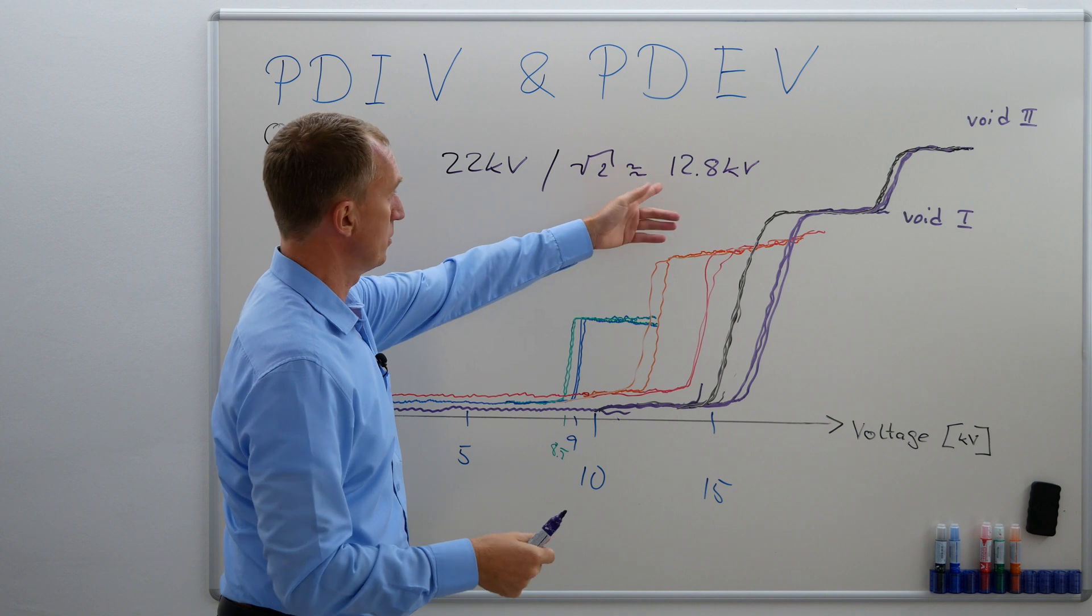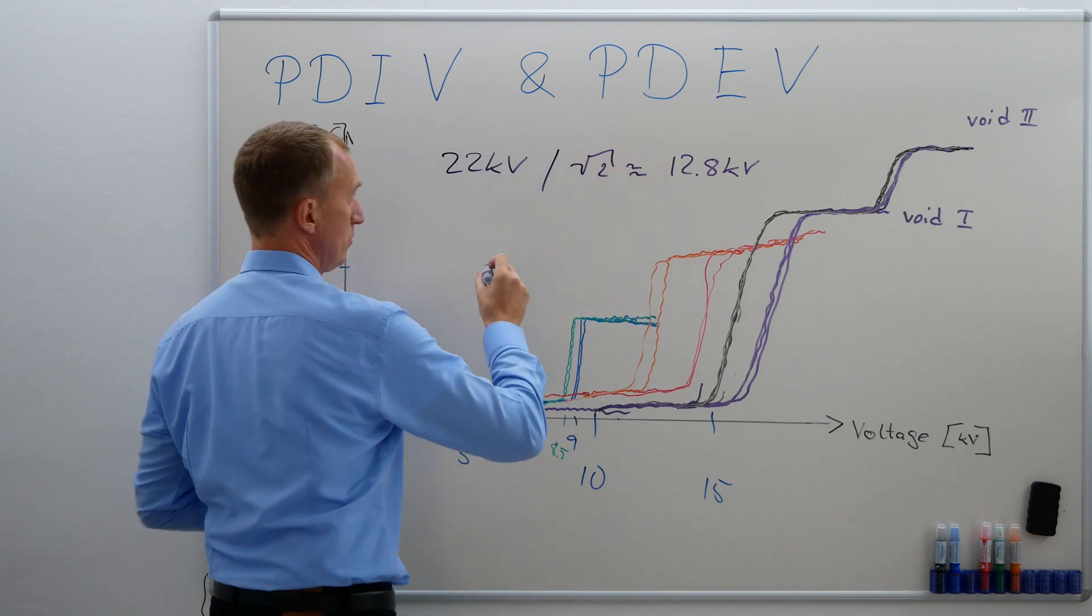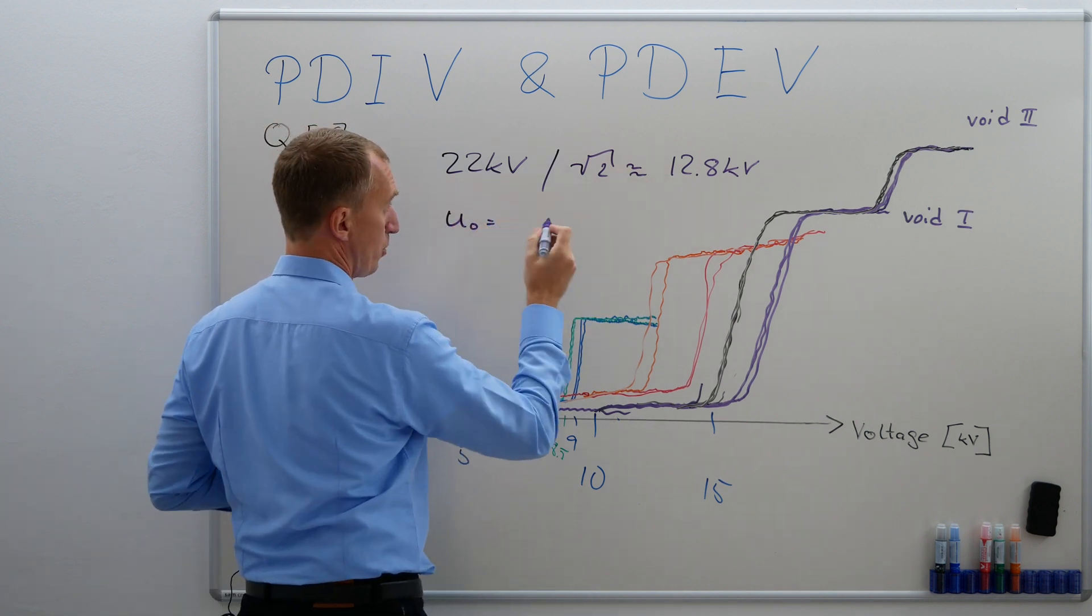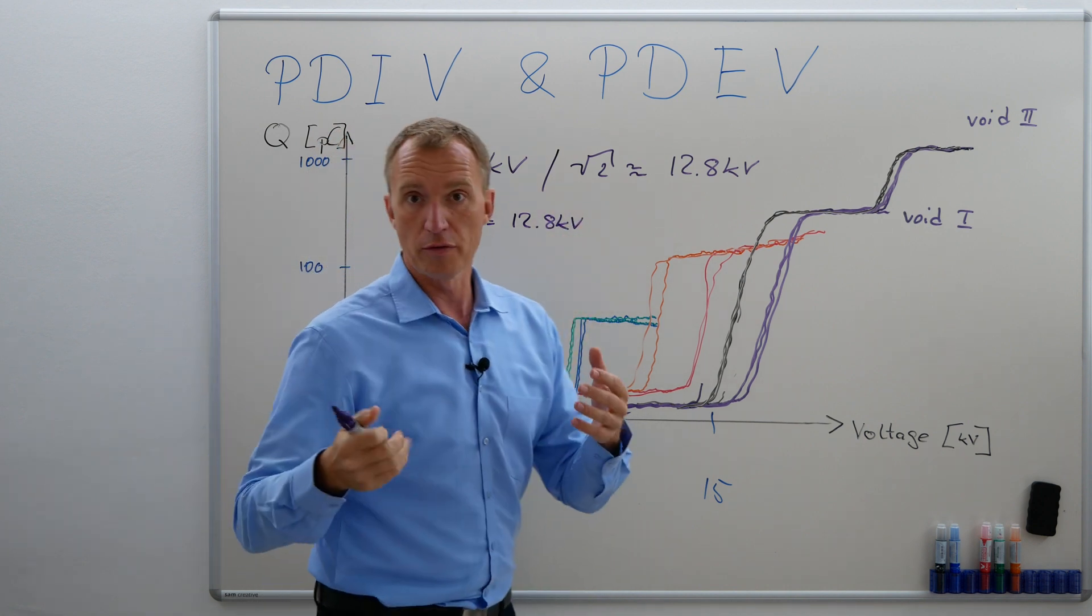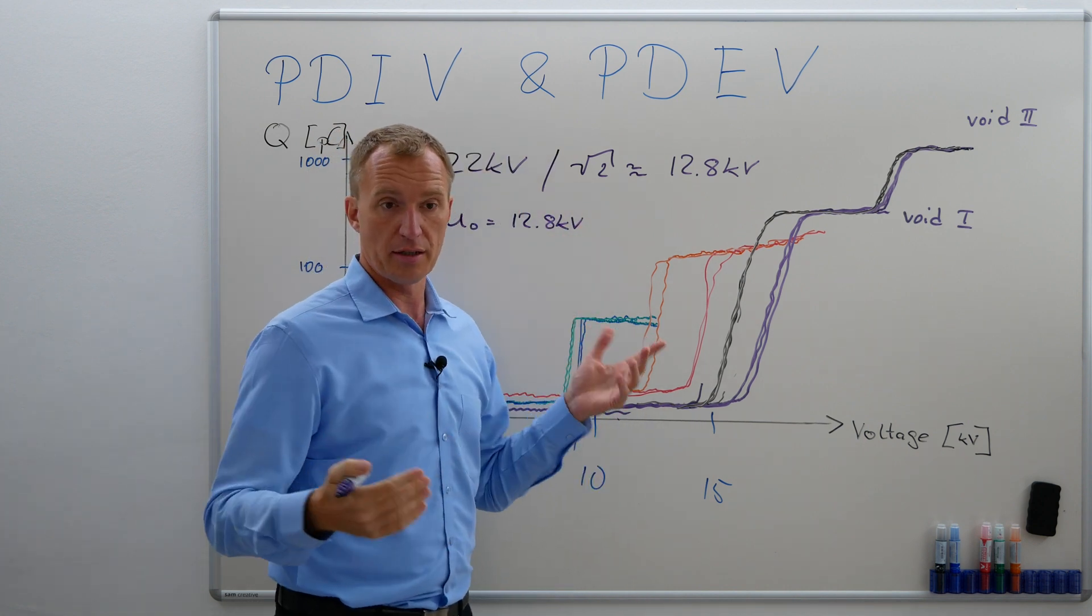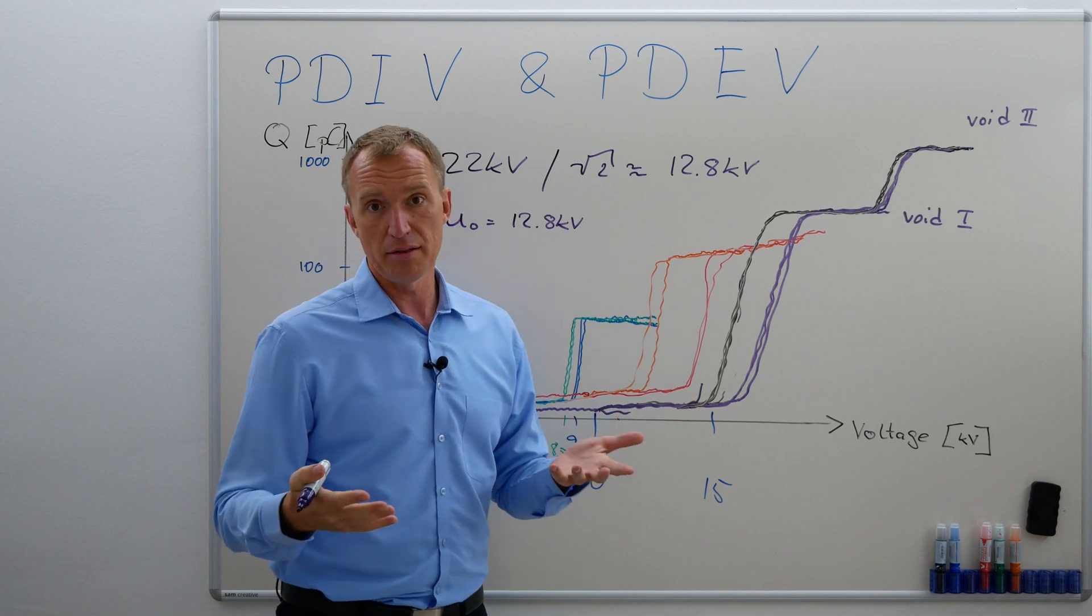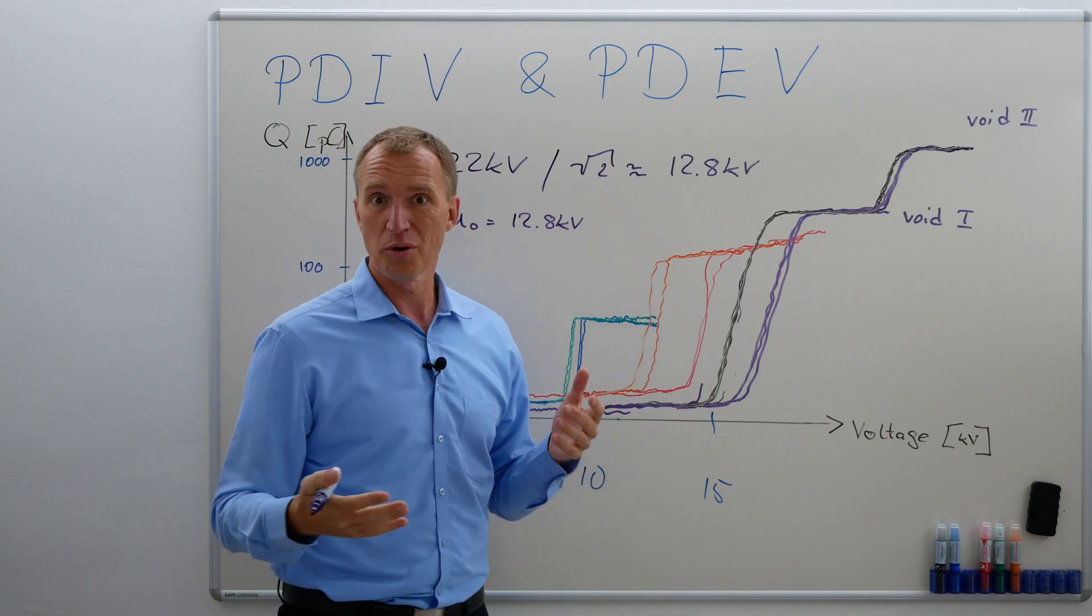This means the U0 of my 22 kV cable, U0, that's the operating voltage, is 12.8 kV. So I will operate this cable at 12.8 kV face-to-ground and obviously this would be one very important value to check.